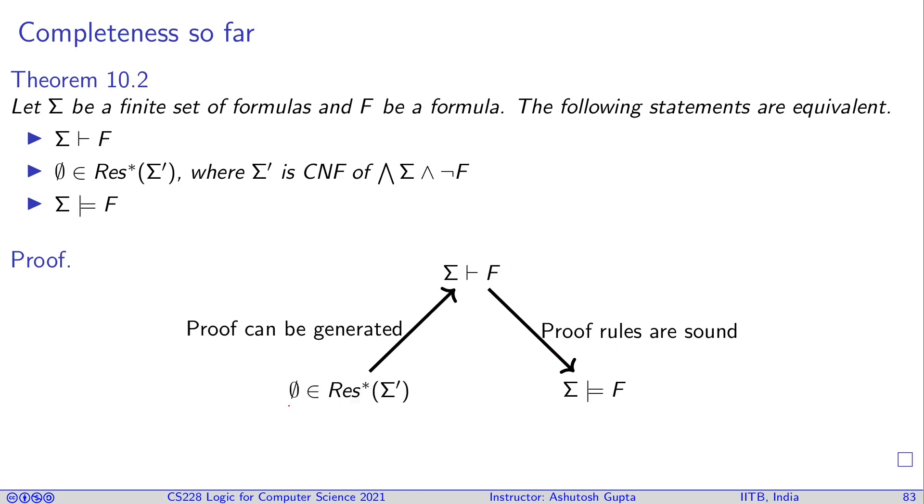We know that if we can produce a resolution proof from sigma prime, then we can construct a derivation in our original proof system. And we have discussed informally at several places, but this can be done. So, proof can be generated. That's the point.